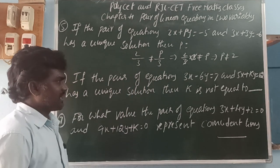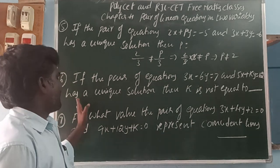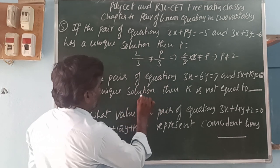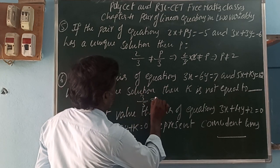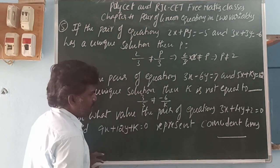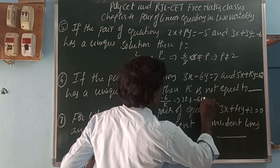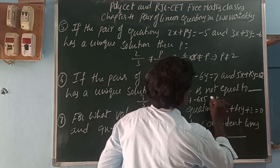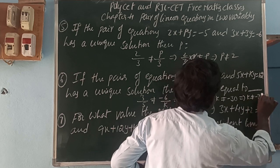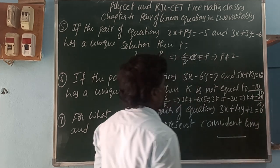Next, if the pair of equations 3x minus 6y equals 7 and 5x plus ky equals 1 has a unique solution, then k is not equal to what? For a unique solution: 3 by 5 is not equal to minus 6 by k. Cross-multiplying: 3k is not equal to minus 6 into 5, so 3k is not equal to minus 30, giving k is not equal to minus 30 by 3, which means k is not equal to minus 10.